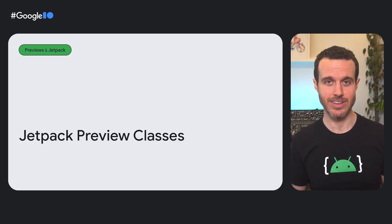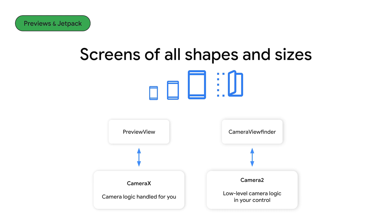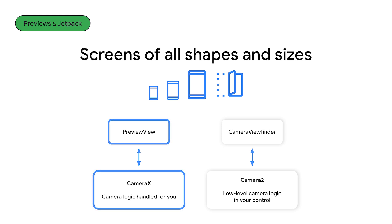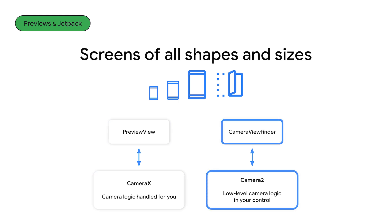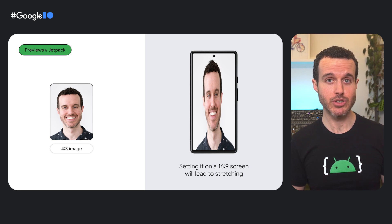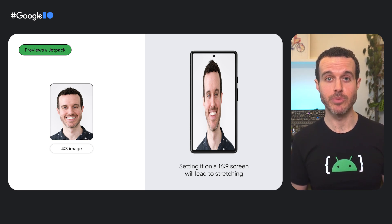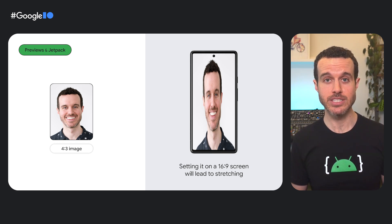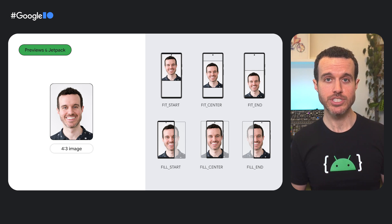Next, let's take a look at some convenience classes in our Jetpack library offering that help with camera previews. Our two Jetpack preview classes can help your camera app deal with screens of all shapes and sizes. For CameraX, you can use the PreviewView class. For Camera2, the class you can use is CameraViewfinder. These classes can be configured so that your preview will display properly no matter what screen it's on. If the camera stream aspect ratio differs from your preview's aspect ratio, naively putting the image on the screen will lead to stretching. You have to make a decision to crop some of the image or show bars on one dimension of the preview.